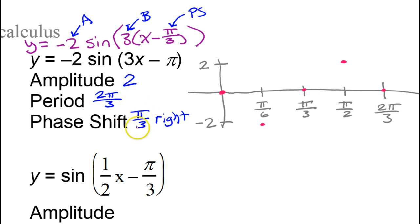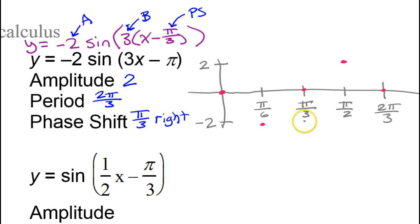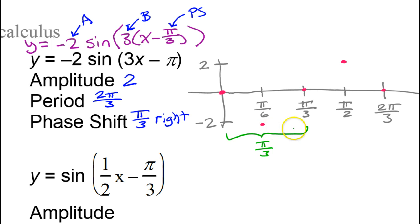However, there is a phase shift of π over 3 to the right. Notice that π over 3 in this problem happens to be one of the values on the x-axis, so that means that this distance is π over 3. A distance of two spaces on this graph is a width of π over 3. So a phase shift of π over 3 to the right means I need to take each one of these points and move them to the right π over 3, which means moving two spaces to the right on this particular graph.